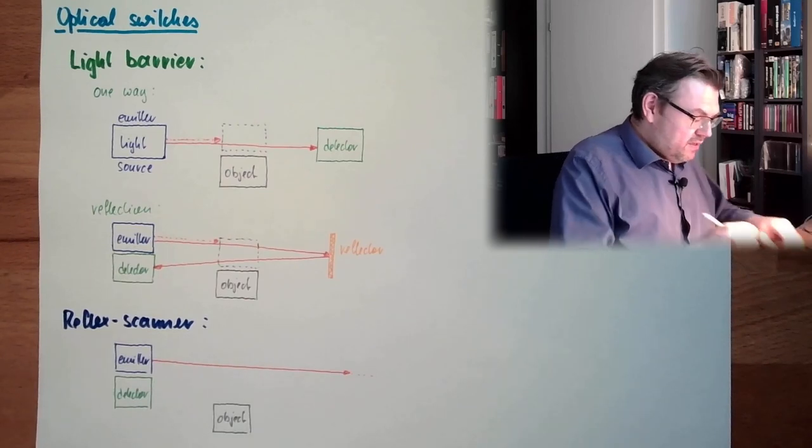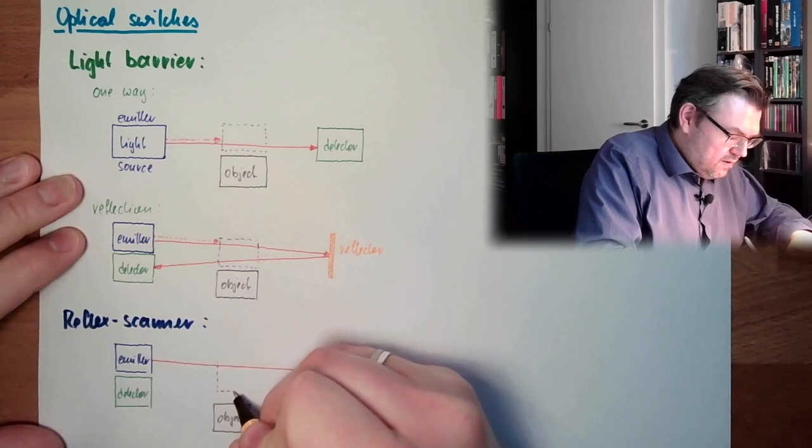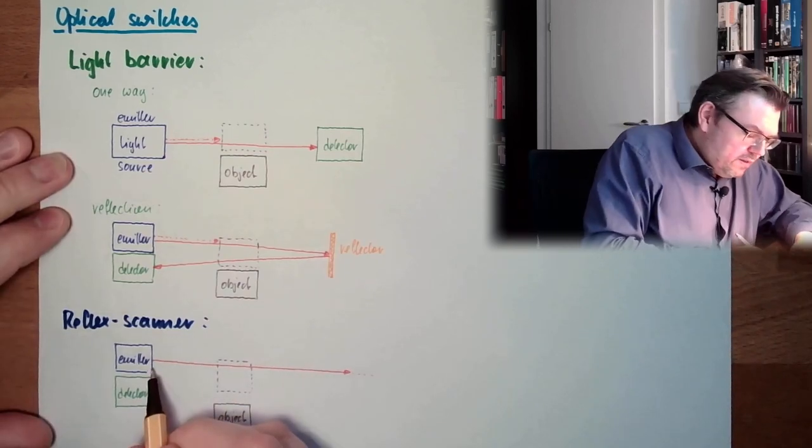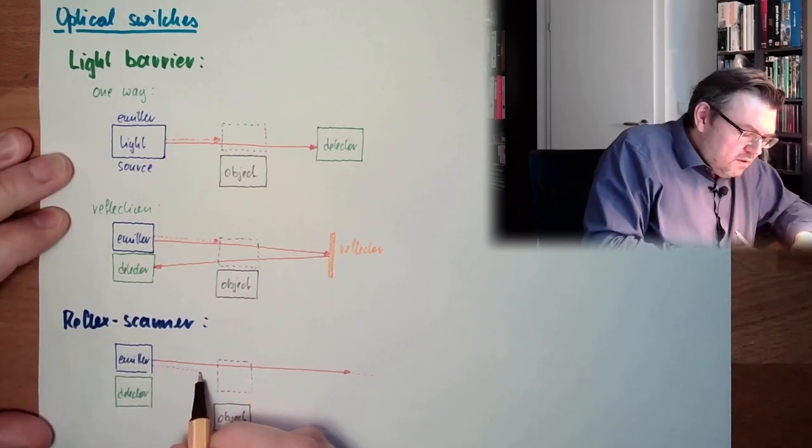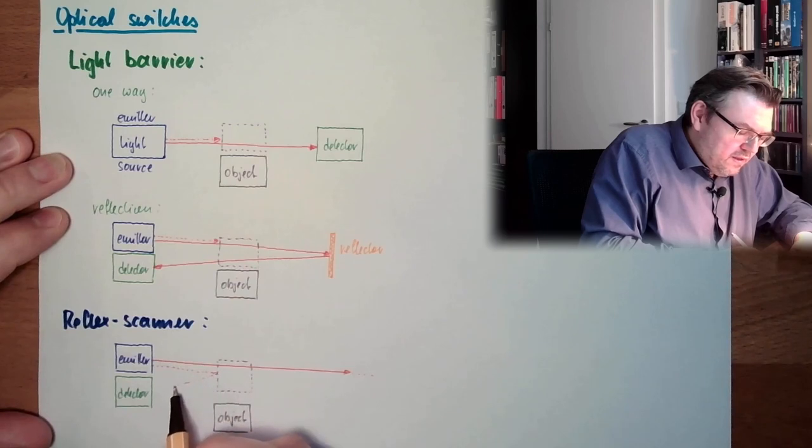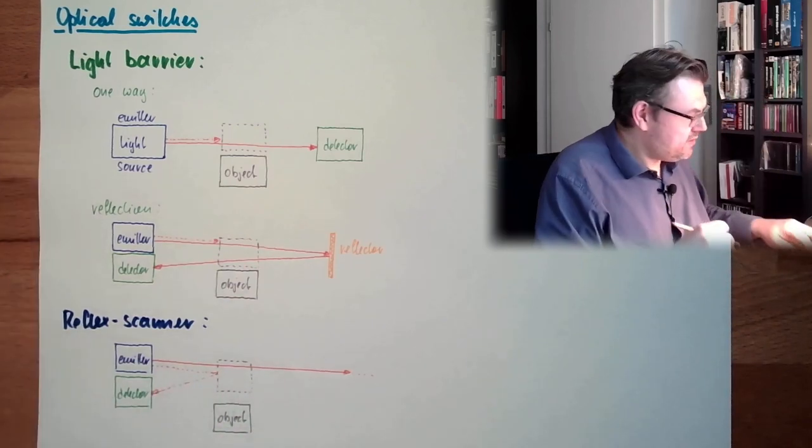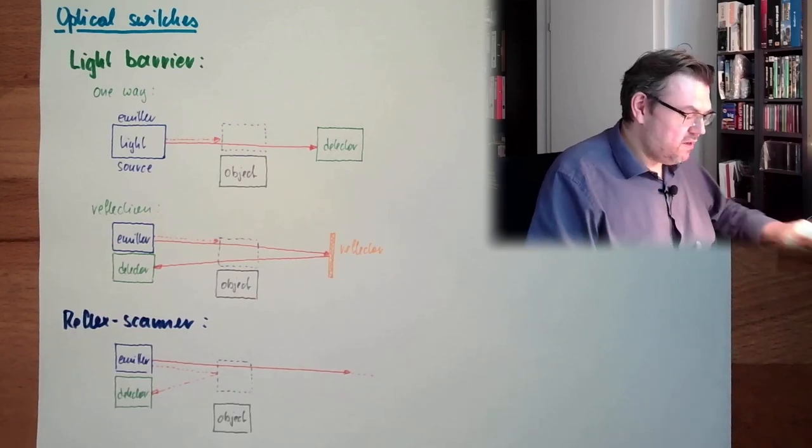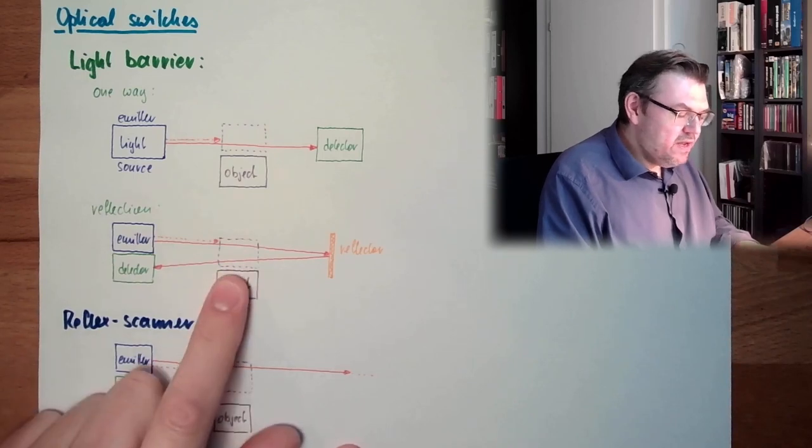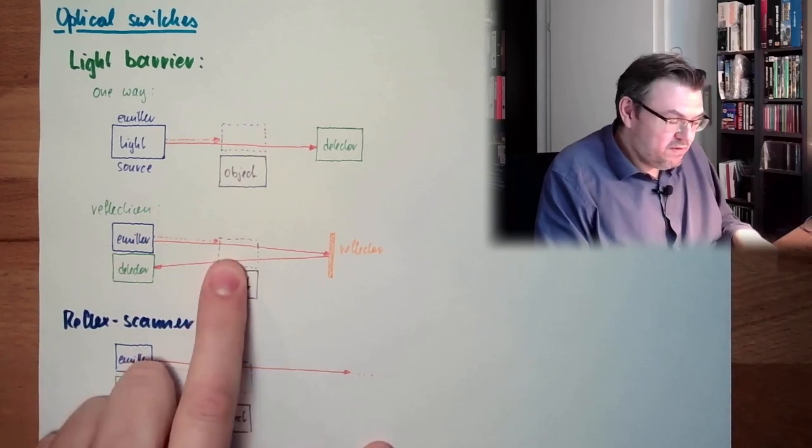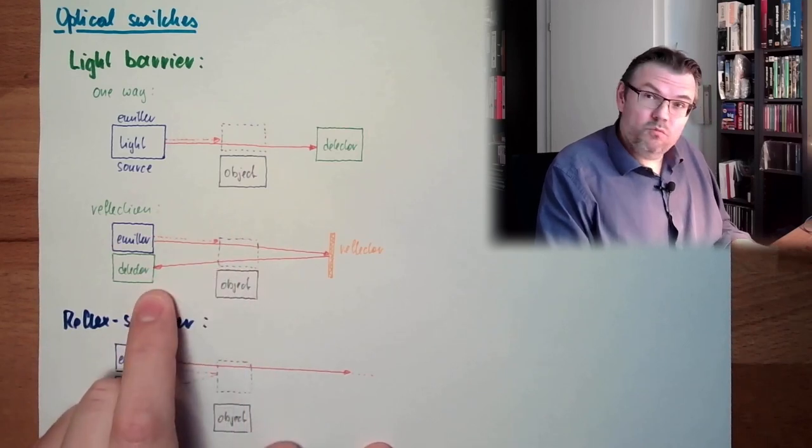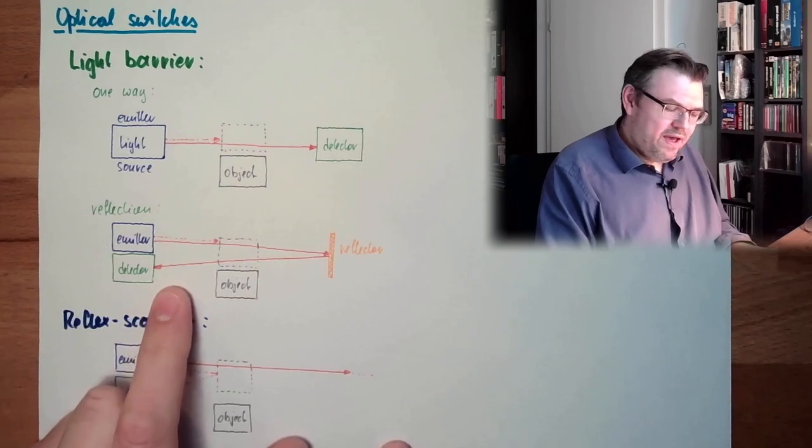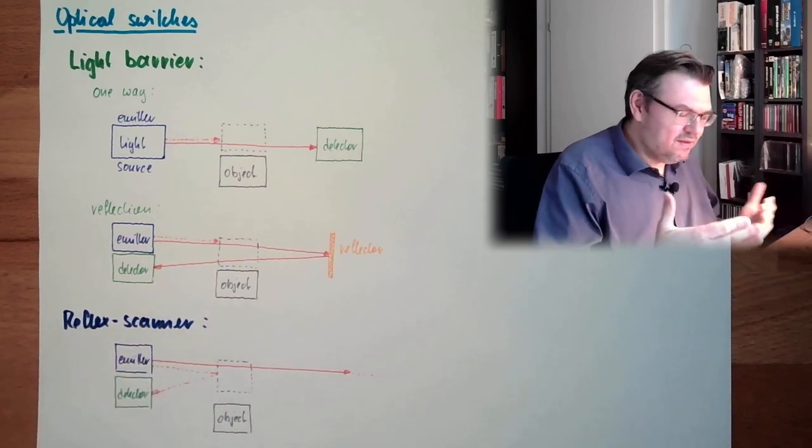And then, if the object is inside, the light of the emitter will hit the object. The object is reflecting the light, and the detector now is detecting the object. That's the reflex scanner. It's scanning for the reflection. So here the object needs to be reflective, here the object needs to be non-reflective, because if I have a reflective object there, the detector would simply not notice it.